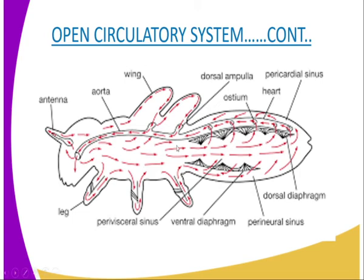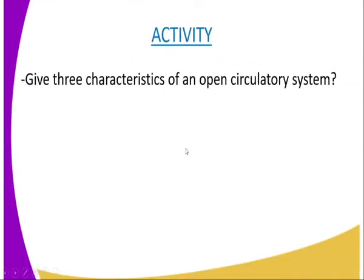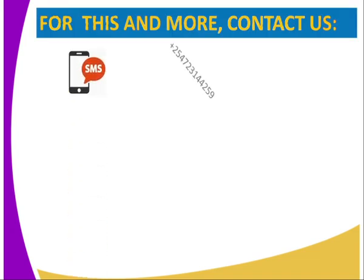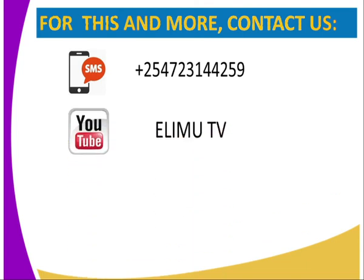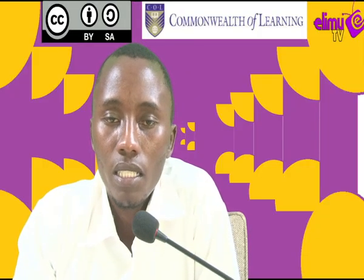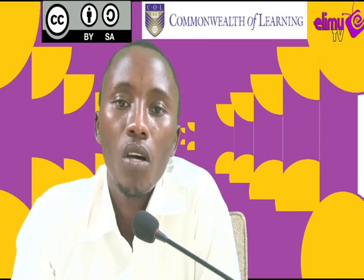Having covered that, the activity for this lesson requires you to give the characteristics of an open circulatory system. Remember, an open circulatory system is generally found in invertebrates. For more on this lesson, you can refer to KLB Secondary Biology Students Book 1, 4th Edition, Nairobi, Kenya Literature Bureau. For this and more biology lessons, you can send us an SMS, subscribe to our YouTube channel at Elimu TV, or send us a message on our Facebook page or Twitter at Elimutv underscore Kenya.